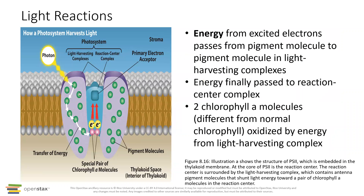The energy from the excited electrons gets passed from one pigment molecule to the next. These proteins are actually shaped kind of like an antenna, focusing the energy down to a specific spot. There are two molecules of chlorophyll A, which are special chlorophyll A's. When they receive this energy from the excited electron, they actually become oxidized. Being oxidized means losing an electron, so each of these then loses an electron, which is passed to the cleverly named electron acceptor.